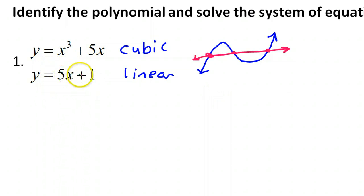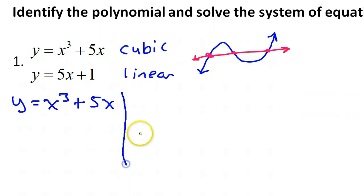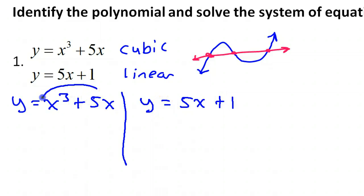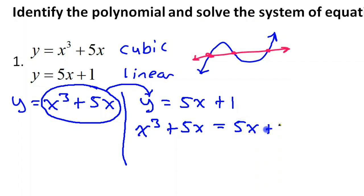Substitution is going to be the way to go here. So looking at it this way, I've got y equals x to the third power plus 5x on the one hand, and then I've got y equals 5x plus 1. If I take this and do a substitution, I'm going to plug it in, and that's going to make x to the third power plus 5x equal to 5x plus 1.